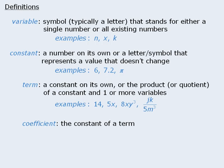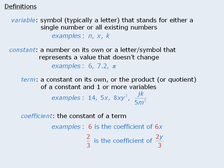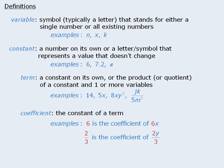Now a coefficient is the constant portion of a term. For example, 6 is the coefficient of 6x, and 2 thirds is the coefficient of 2y over 3. Now if a term does not appear to have a coefficient, then that coefficient is assumed to be 1. So for example, the coefficient of w squared is assumed to be 1.